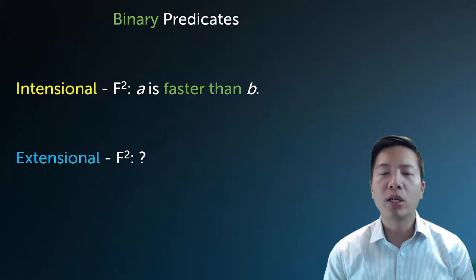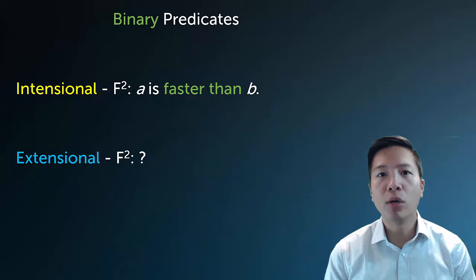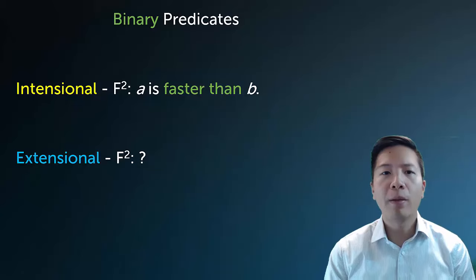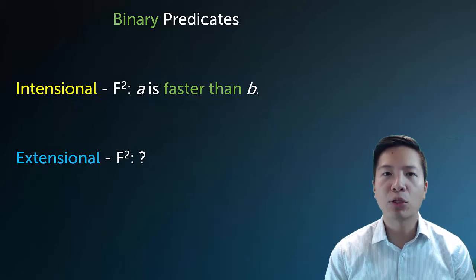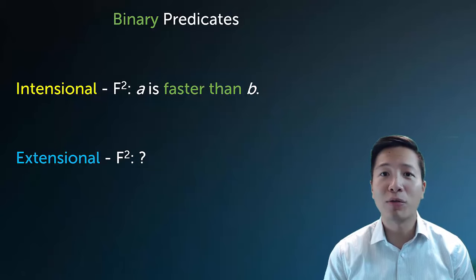But the issue is, we didn't look at how to express higher place predicates. So when I look at the intentional definition of, say, F2, I can easily capture it as 'A is faster than B', for example. But how could I express that extensionally? How could I put all the members into a set that captures the meaning of 'A is faster than B'? Well, it's actually not so convenient.